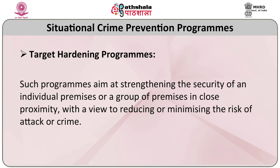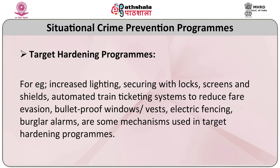The types of government interventions include situational crime prevention programs such as target hardening programs. Such programs aim at strengthening the security of an individual premises or a group of premises in close proximity, with a view to reducing or minimizing the risk of attack or crime. Examples include increased lighting, securing with locks, screens and shields, automated train ticketing systems to reduce fare evasion, bulletproof windows and vests, electric fencing, and burglar alarms.